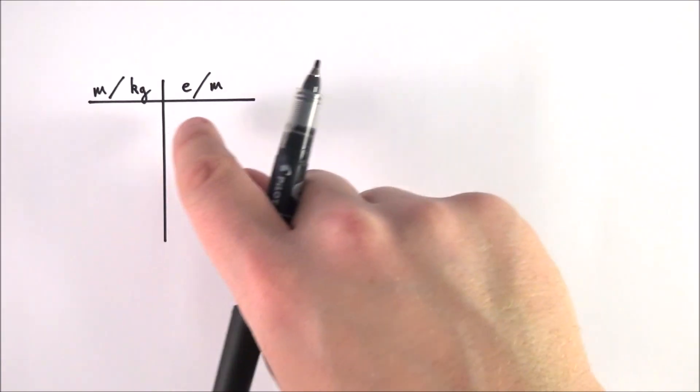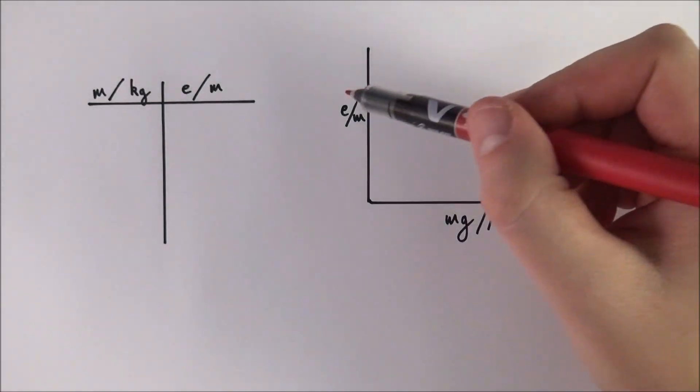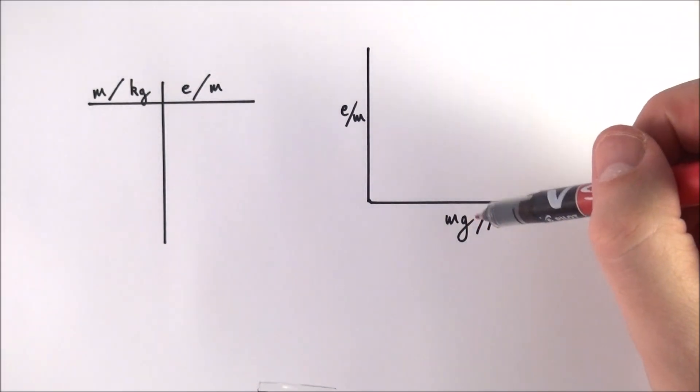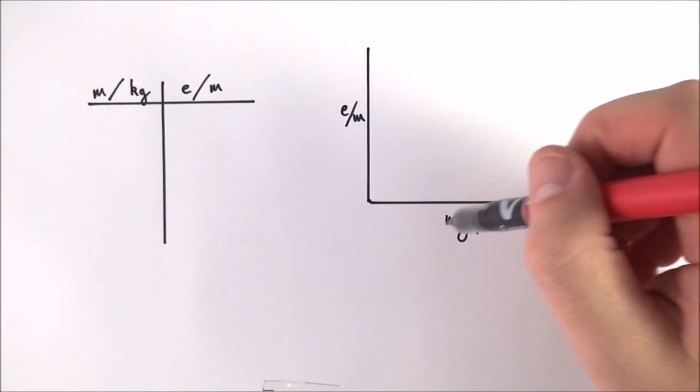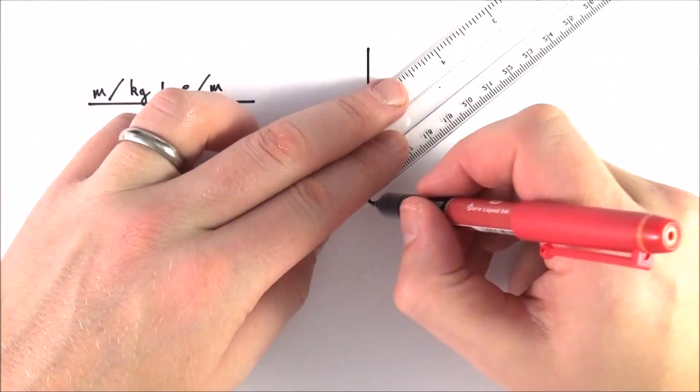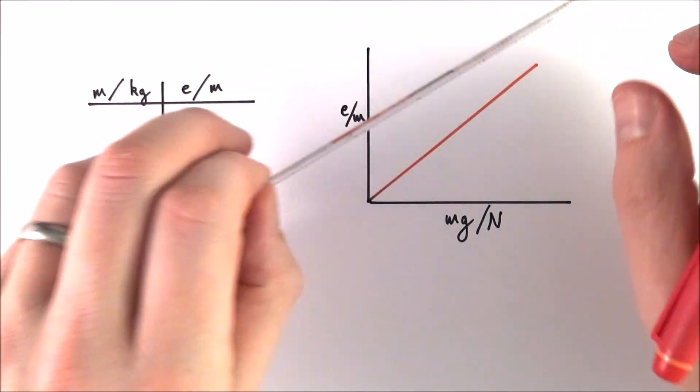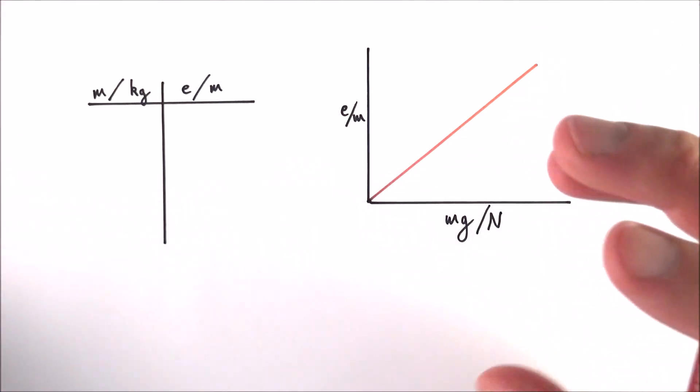So you measure the mass, you measure the extension, and what you can then do is plot a graph like this. So you have a graph of extension against the tension or the weight that you've added to it, so this is m times g in newtons, and what you should get is a straight line. And again if it doesn't go through the origin it might be shifted up or to the right perhaps because you have the unkinking initially.